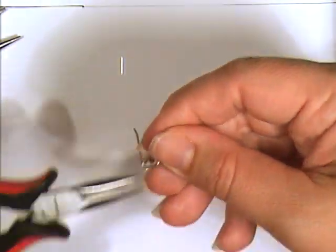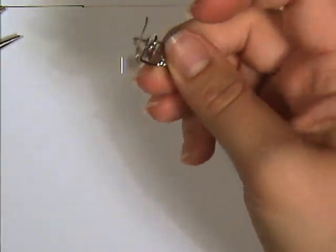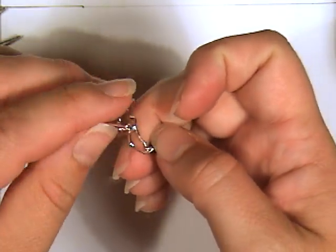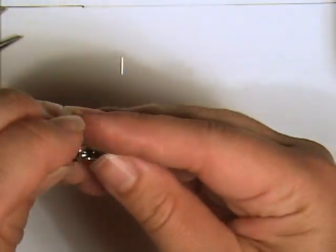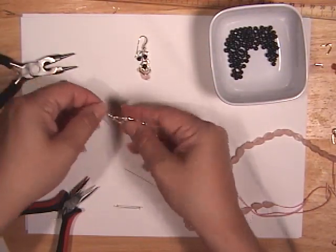Now when you're cutting off the excess end with your flush cutters, you want to make sure that you don't accidentally cut anything that you don't want to. So you want to make sure that you're looking real close at what you're cutting because you don't want to ruin what work you've just done. So now I've got two of the black onyx beads.